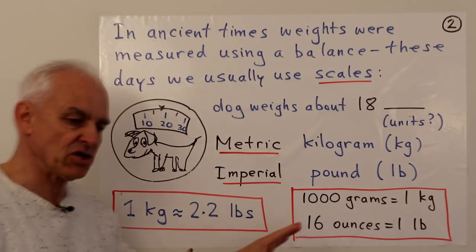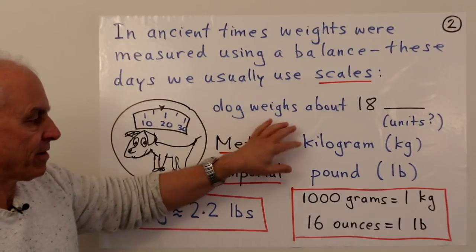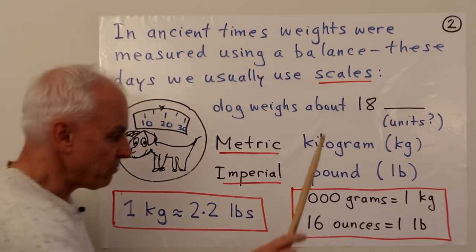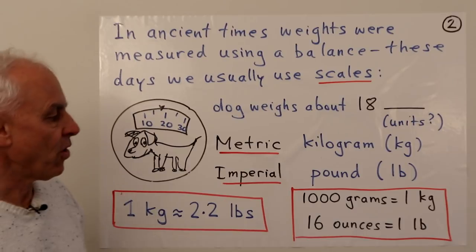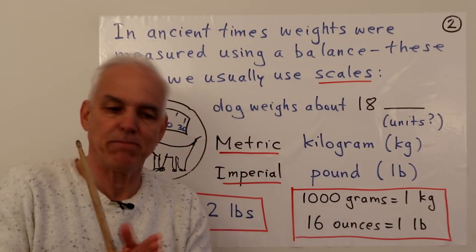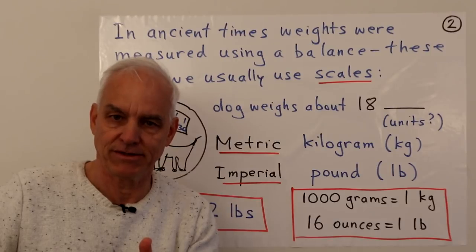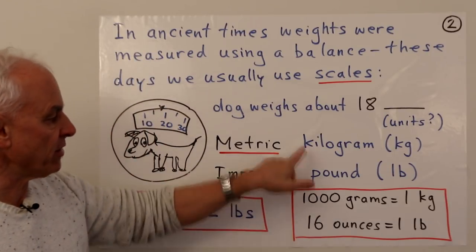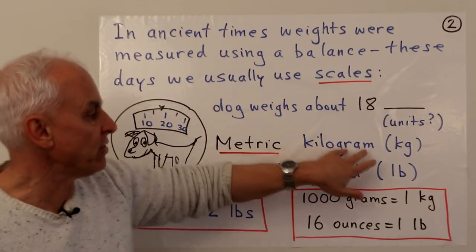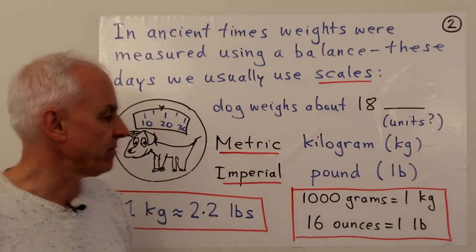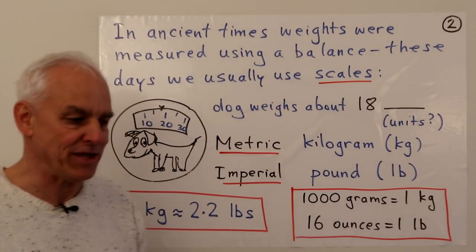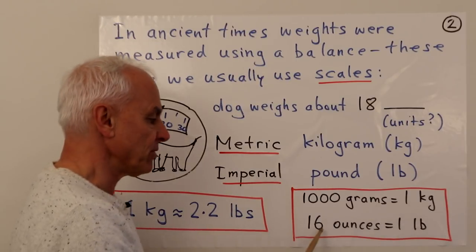There are also subdivisions. A kilogram is also a thousand grams — consistent with the metric system, which uses powers of 10 for subunits and bigger units. The prefix 'kilo' refers to one thousand, so kilogram means a thousand grams. In the imperial system, things are a little more ad hoc — one pound is equal to 16 ounces.